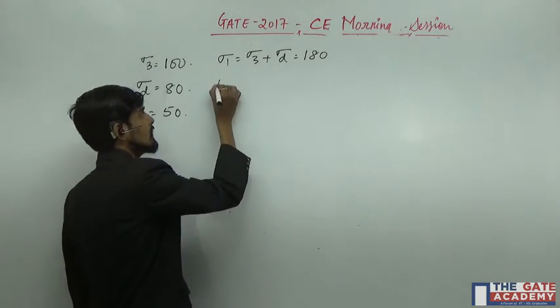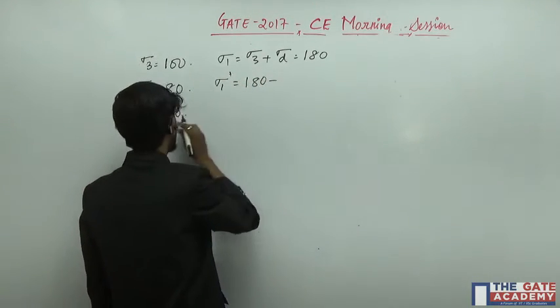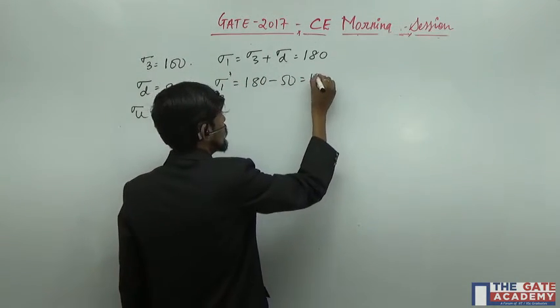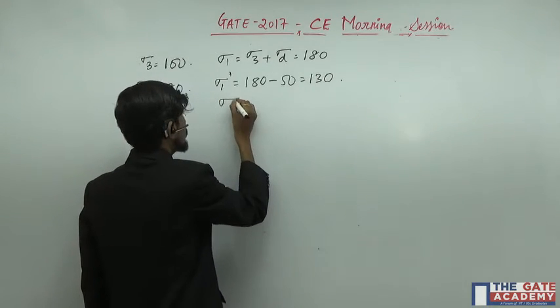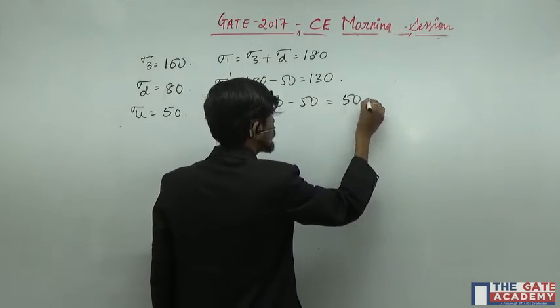The effective stress parameter, sigma 1 dash is equal to 180 minus pore water pressure 50, which equals 130. Similarly, sigma 3 dash is equal to 100 minus 50, that is equal to 50.